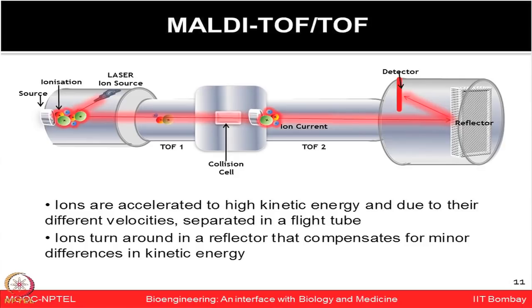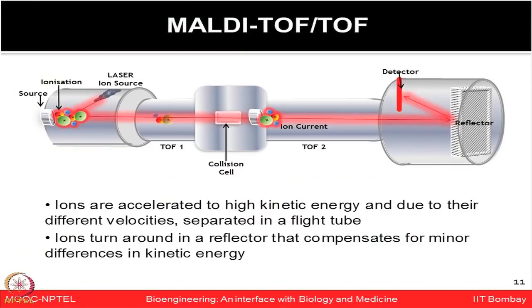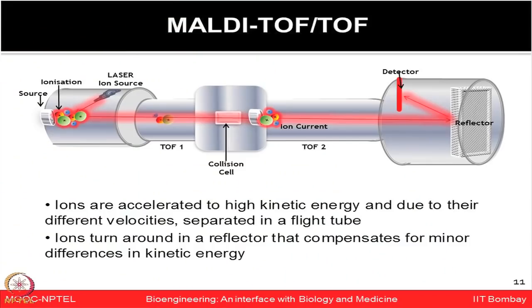In a TOF-TOF configuration, after the first mass analyzer (TOF 1) there is a collision cell which selects precursor ions, fragments them further, and generates a spectrum that can be used to obtain peptide sequence information. By using two TOF tubes and analyzing the fragmentation pattern of each ion, basic peptide sequences can be obtained.